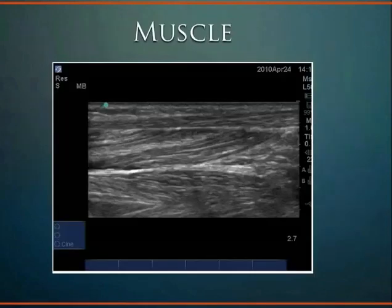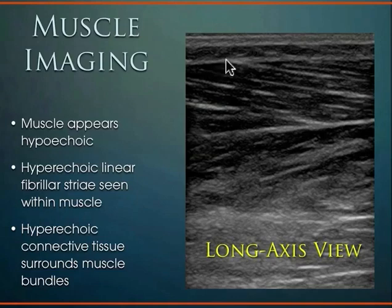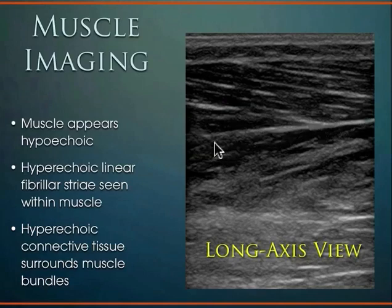Moving to muscle: muscle is another tissue seen very nicely with ultrasound. Muscles tend to be more hypoechoic — not as dense as a tendon or ligament — and have a fibrillar pattern related to interwoven connective tissue within the muscle. On this image: superficial subcutaneous structures, then the connective tissue fascial plane for the muscle, deep to that the fibrillar striated component, another fascial layer, and then deeper muscle structures. You also have that hyperechoic connective tissue with fascial planes clearly visible.